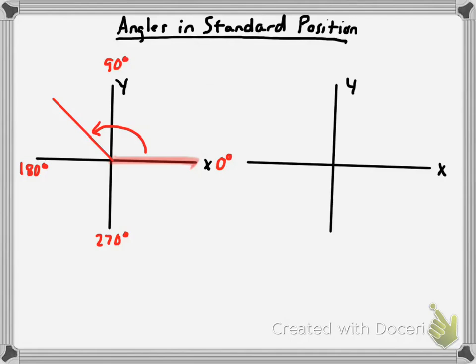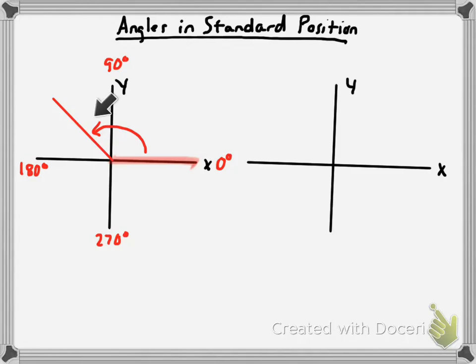With bearings, you would say that north was zero degrees, but this is not a north-east-south-west deal. This is an xy coordinate plane. If there were compass directions here, we'd say zero degrees is north and measure clockwise. But since it's a coordinate plane, we say zero degrees is on the positive x-axis, and we measure counterclockwise. So this angle I just drew could be a 130 degree angle in standard position.